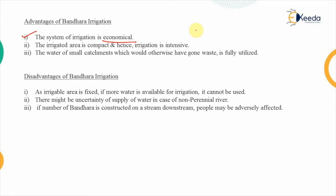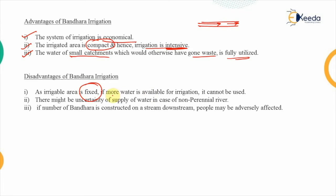The irrigated area receiving supply from the diverted water is compact and well-defined, so irrigation will be intensive — the same amount of water is supplied repeatedly. Water from small catchments that would otherwise go to waste is fully utilized; that is the main advantage of Bandara irrigation. However, limitations include: the irrigable area is already fixed so extra water from additional rainfall cannot be used; if the river level is non-perennial the water supply becomes uncertain; and if many Bandaras are created across the stream, people dependent on the stream water level will be adversely affected.